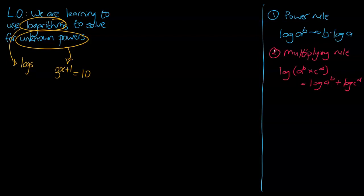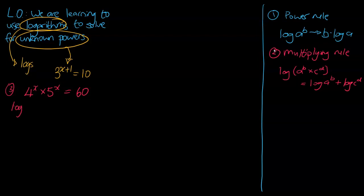It is definitely a bit trickier than before. Moving on to the third question: we've got 4 to the power of x, being multiplied by 5 to the power of x, and that equals 60. First thing that draws your eye should be those unknown powers — straight away you should be thinking logs. So we're going to log both sides, and don't forget we're logging the entire side, so we wrap it in a bracket: log(4^x × 5^x) equals log 60.